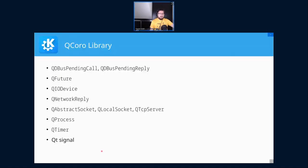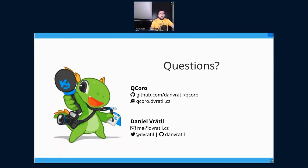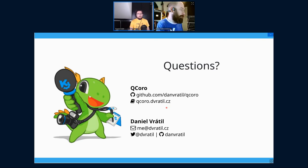QCoro supports many Qt classes including QTimer — where you can co_await a timer timeout — co_awaiting any arbitrary signal emission, and general QIODevice support. If you're interested in the QCoro library, there's a GitHub repository at github.com/qcoro, with documentation and contact via email, Twitter, or Matrix.